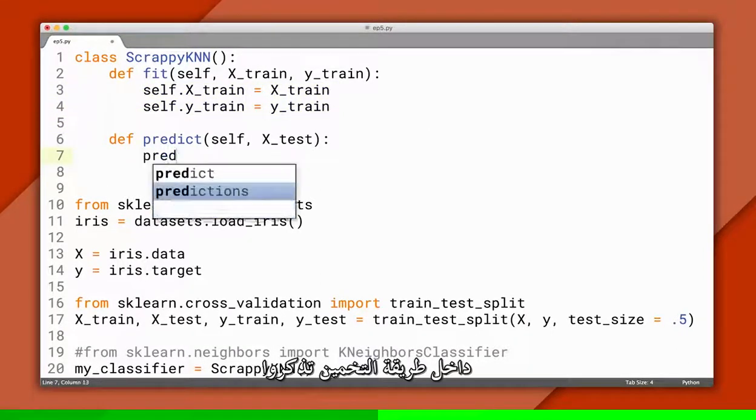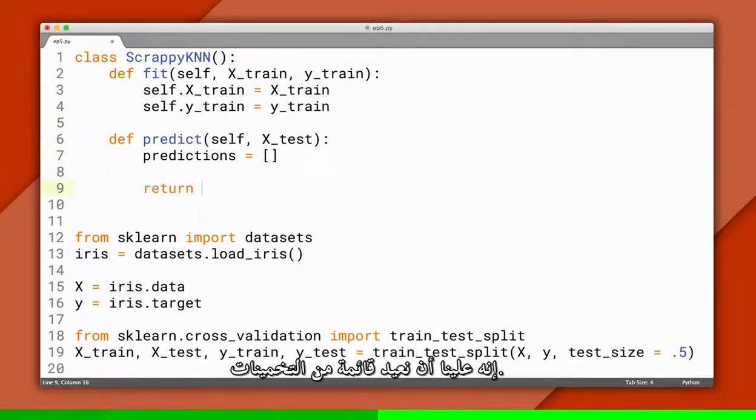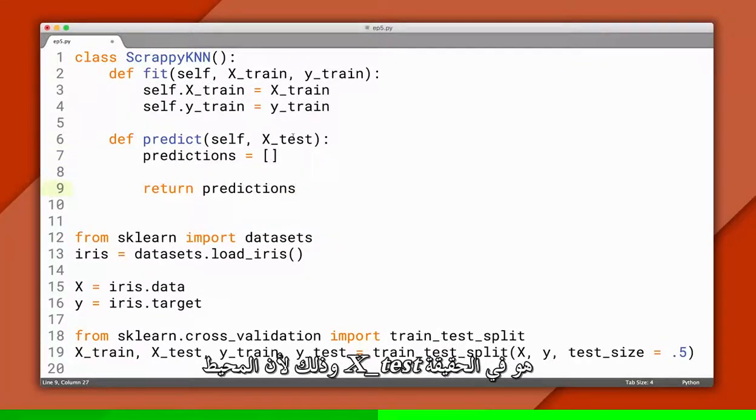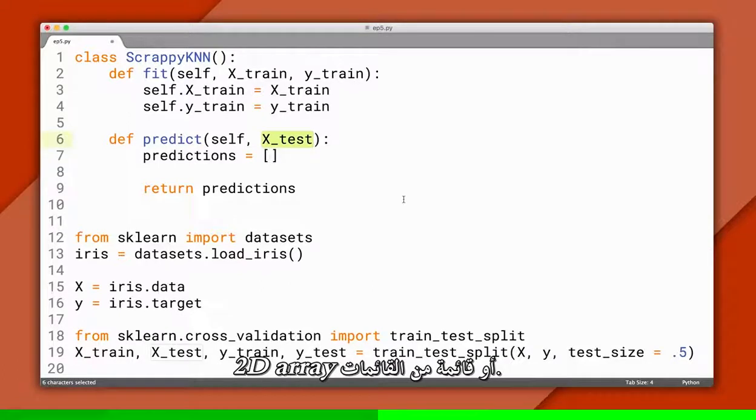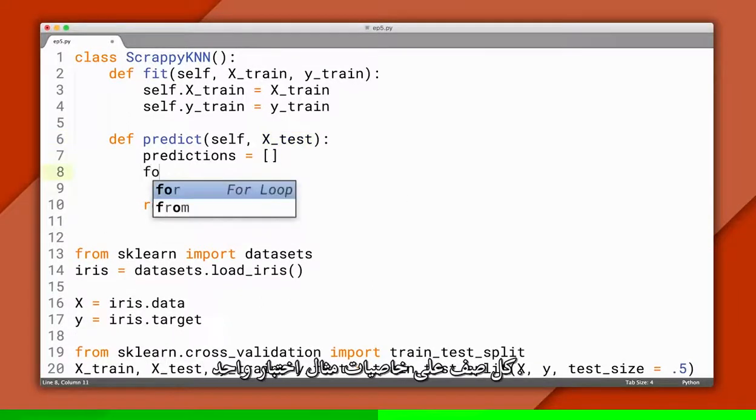Inside the predict method, remember that we'll need to return a list of predictions. That's because the parameter, xtest, is actually a 2D array or a list of lists. Each row contains the features for one testing example.